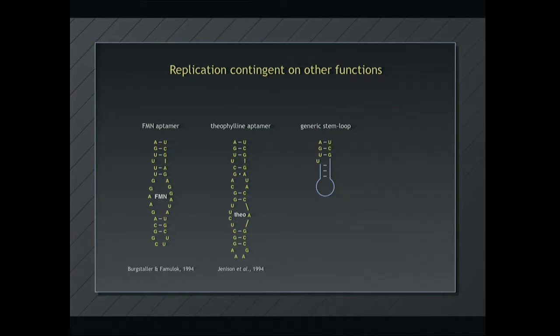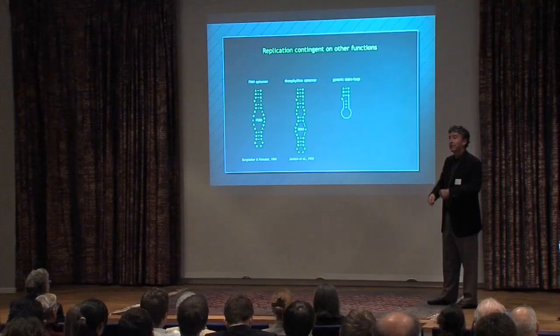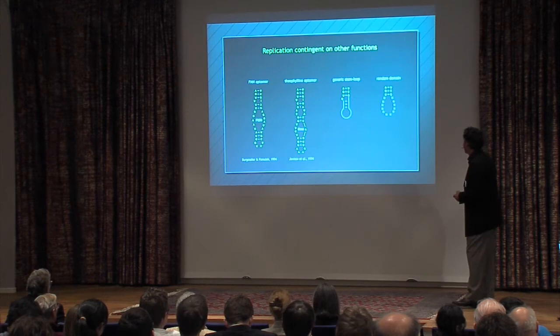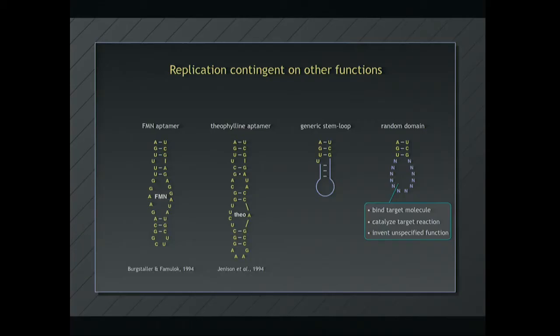So that makes the replication contingent on theophylline, or flavin mononucleotide, or whatever the aptamer is sensing. And of course, more broadly, what one wants is an encoded random sequence domain that might, from that random sequence domain, evolve the ability to be an aptamer for a target molecule, to catalyze an, albeit simple, given the number of nucleotides, chemical reaction, or to invent whatever it wants.